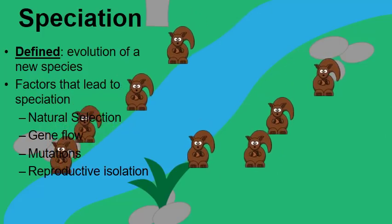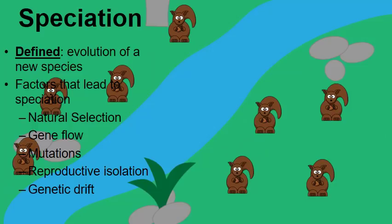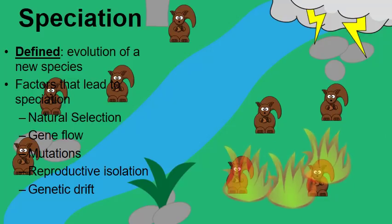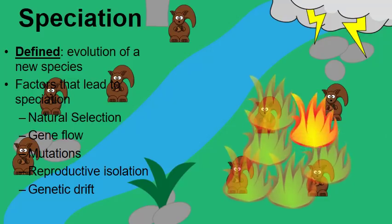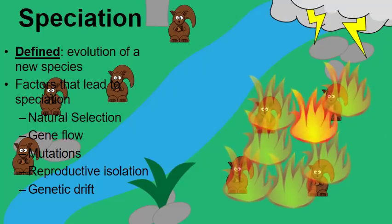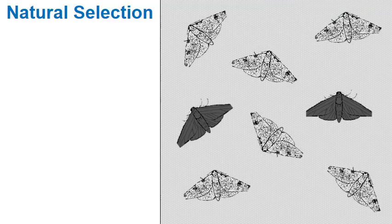Lastly, there's something called genetic drift — changes that happen due to chance and not necessarily natural selection. Let's say a storm causes a lightning strike and a fire spreads. The squirrels try to flee but are unable to. Now look at the squirrels on the left of the river — did they survive because of adaptations from natural selection? No, they survived because they were in the right place at the right time. We'll talk more about genetic drift in a little bit.